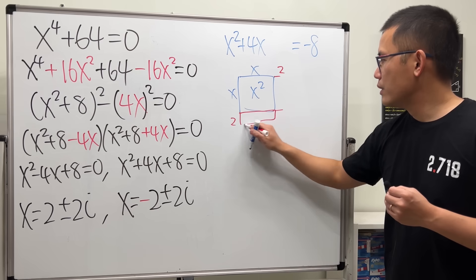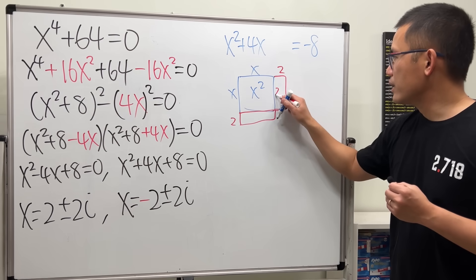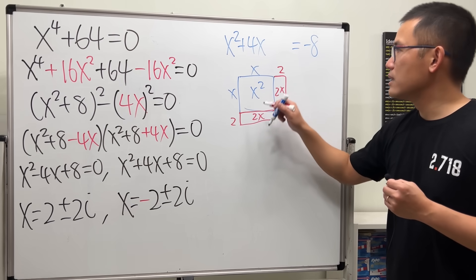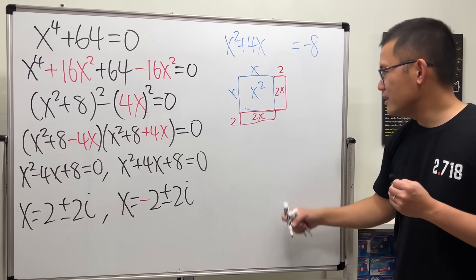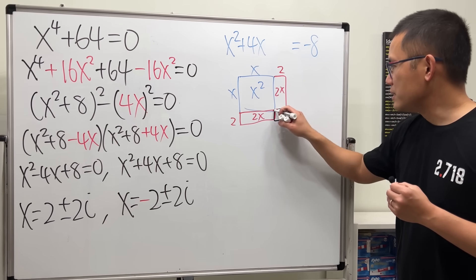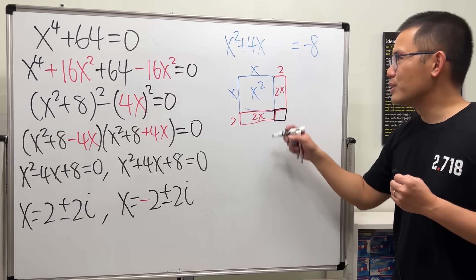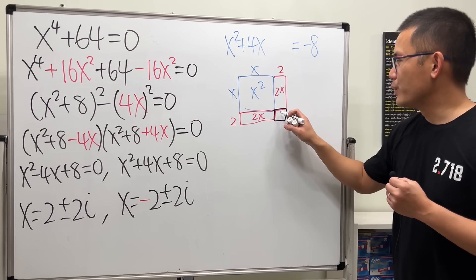So, if you put it down like this, you get 2x and 2x. Because, this way, as you can see, we will have a corner that's missing. And, this corner is just 2 times 2, which is 4.